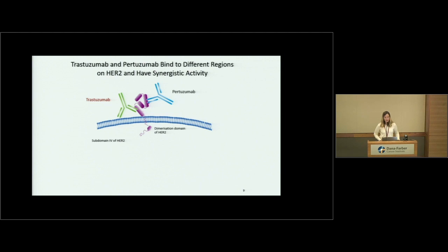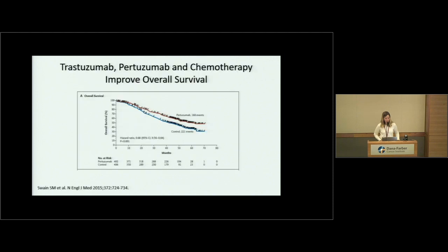After trastuzumab's promising results, work began on how to make it better. Pertuzumab is another drug that binds to a different area of the HER2 protein. It doesn't work well on its own, but when you give it together with trastuzumab, it works even better than trastuzumab and chemotherapy alone. The CLEOPATRA study demonstrated this, and now we give that treatment for HER2-positive metastatic breast cancer when it's first diagnosed.